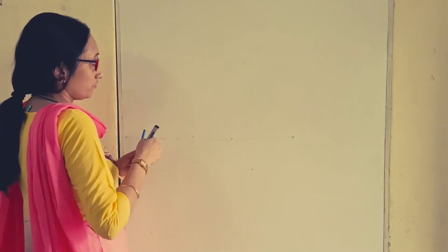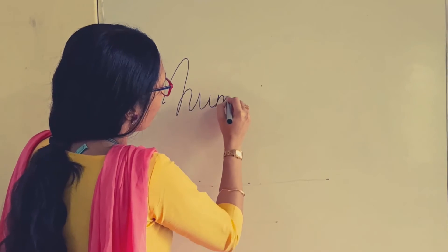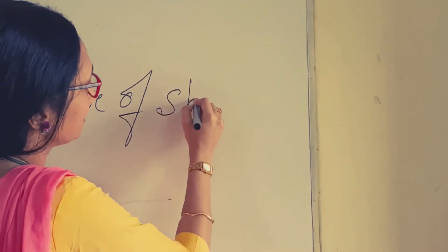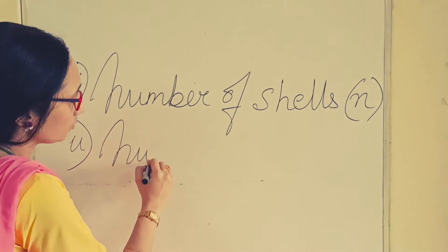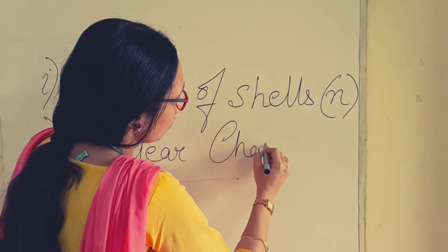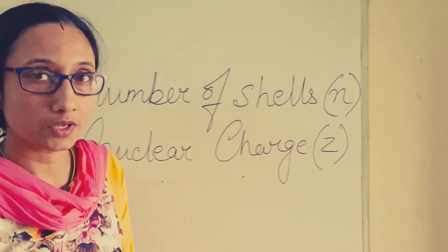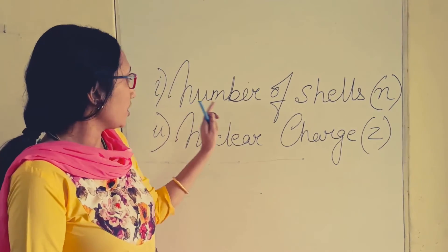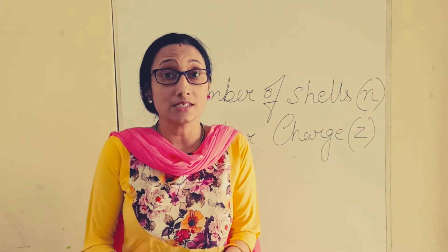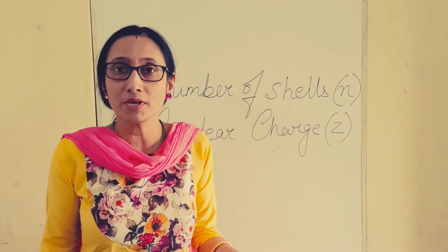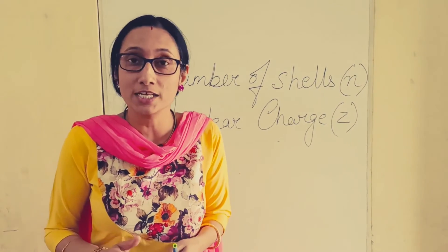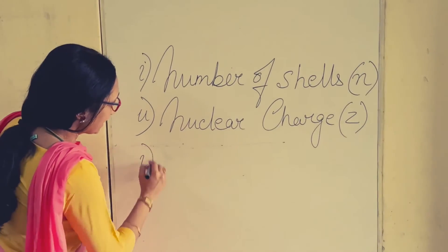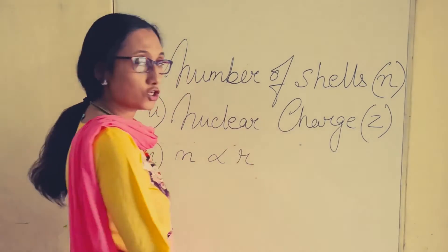What are the two factors on which atomic radius depends? The first factor is number of shells, which we designate as N. An increase in the number of shells will increase the atomic radius, because the distance of the outermost shell from the nucleus will increase. So we can say that N — number of shells — is directly proportional to atomic radius.